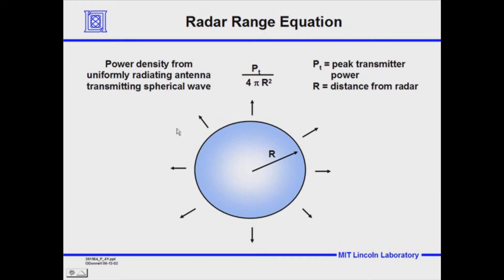Now let's start off with deriving the radar range equation from basic physical principles. We'll just need algebra and good physical intuition. Let's start with the radar transmitting a pulse in the simplest possible way — transmitting a spherically symmetric uniform pulse of energy with a given power, radiating out uniformly in all directions. That peak power of the pulse we denote as P sub T, the peak power of the transmitter.